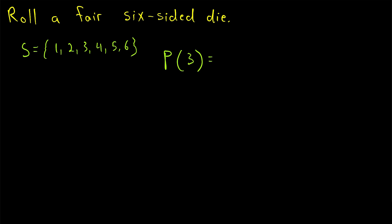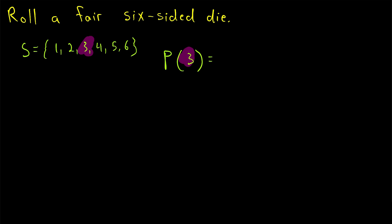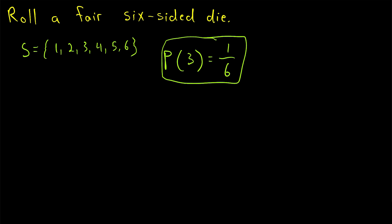I think it's pretty intuitive to realize that in an experiment that has six possible outcomes that are all equally likely, the probability of any one of those outcomes occurring — like the probability of rolling a 3 — is 1 divided by the total number of possible outcomes, which in this case is 6. So that would be a probability of 1 over 6. And since all the probabilities are equally likely, that is also the probability of rolling a 1, 2, 4, 5, or a 6.